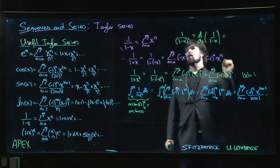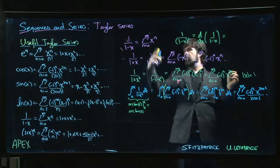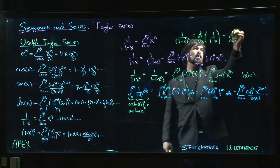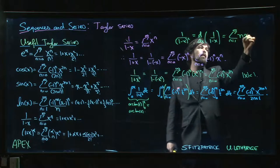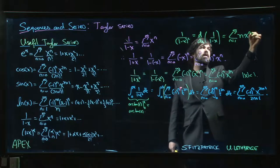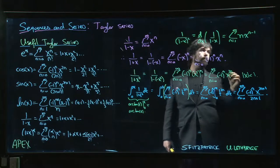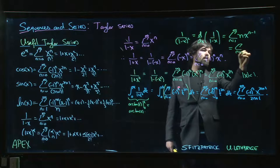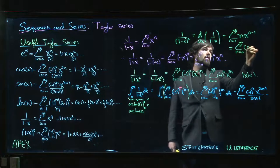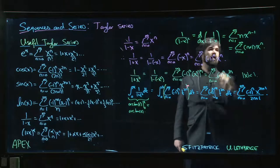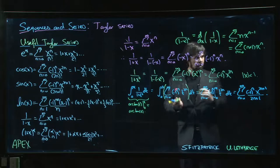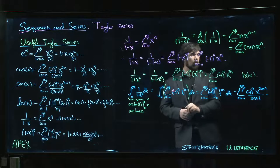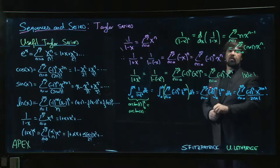But we can take the derivative of this thing term by term, and we just get the sum n going from 1 to infinity of n times x to the n minus 1. Which, if we want, we can re-index that: n goes from 0 to infinity, n plus 1, x to the n. Now you have a power series expansion for 1 over 1 minus x squared. Or perhaps more useful would be the observation that if this power series popped up, you can identify it with a function.